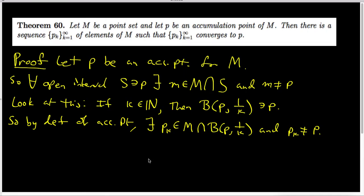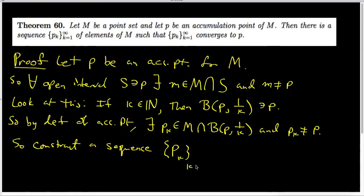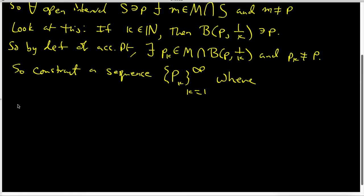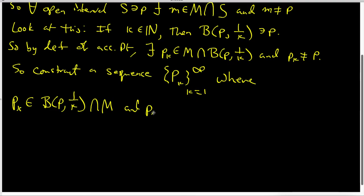I can do this for each and every one of the natural numbers. So we can construct a sequence that I'm going to write as pk as k goes from 1 to infinity, where all I know about pk is that pk is inside this delta ball centered at p of radius 1 over k, and it's in M, and pk is not equal to p. This is where we have used the hypothesis that p is an accumulation point.